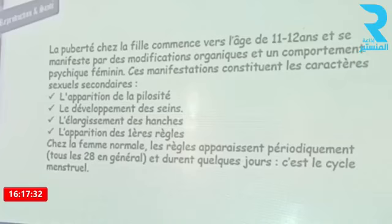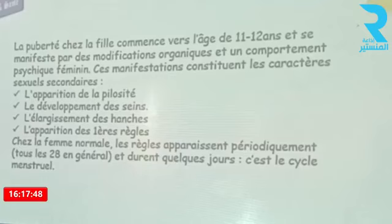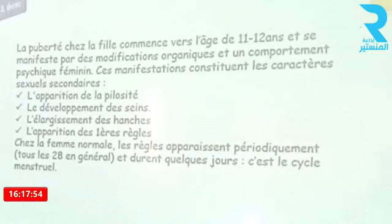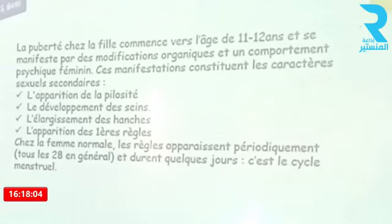Notre chapitre doit commencer par la détermination des manifestations et des modifications qui s'accompagnent à la phase de la puberté chez la fille, qui commence vers l'âge de 11 à 12 ans et se manifeste par l'ensemble des modifications organiques et des comportements psychiques chez le sexe féminin. Ces manifestations constituent ce qu'on appelle les caractères sexuels secondaires. Par exemple, on a l'apparition des pilosités dans des endroits précis, le développement des seins, l'élargissement des hanches, l'apparition des premières règles ou menstruation.